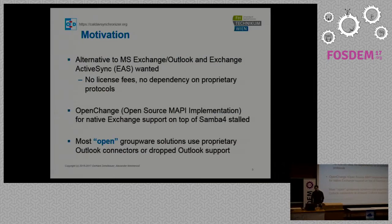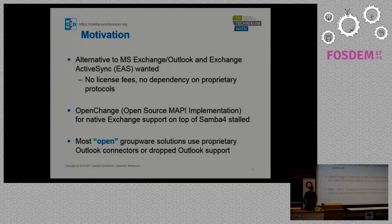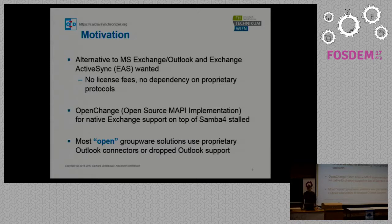More seriously, what are the alternatives to Exchange Outlook deployments? Of course there's the Exchange ActiveSync protocol. Some open source solutions implemented that, but it's still a proprietary protocol and it also has some limitations together with Outlook. Then there was OpenChange — the only open source MAPI implementation on top of Samba 4 — but unfortunately this project got stalled as well; even the website is down at the moment. And there are many other so-called open groupware solutions which use proprietary connectors for integrating Outlook or dropped Outlook support completely, like Zarafa was doing in the last years.